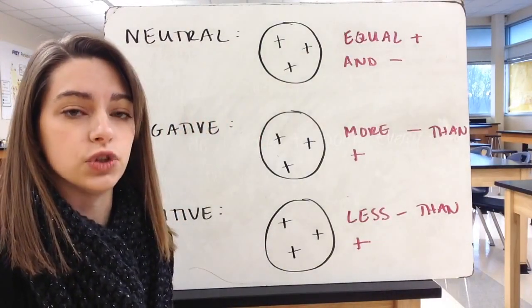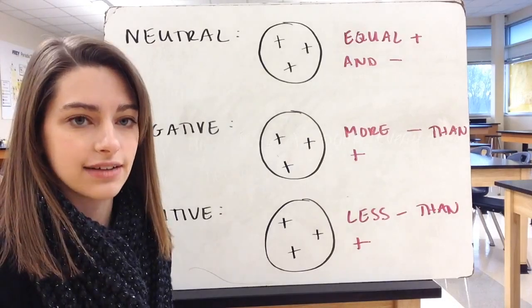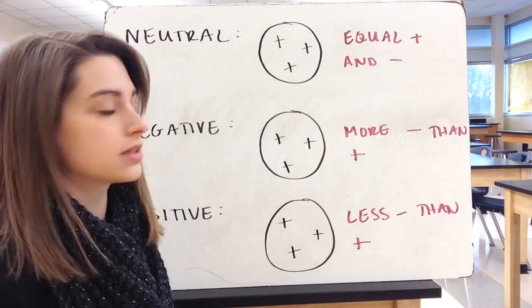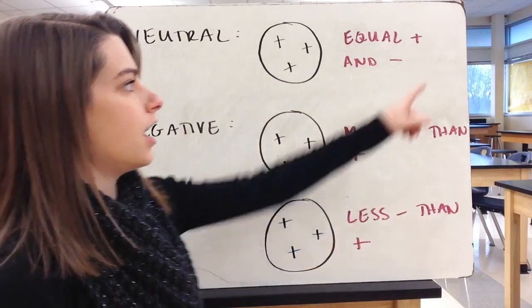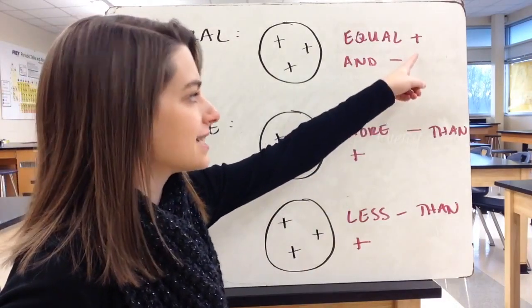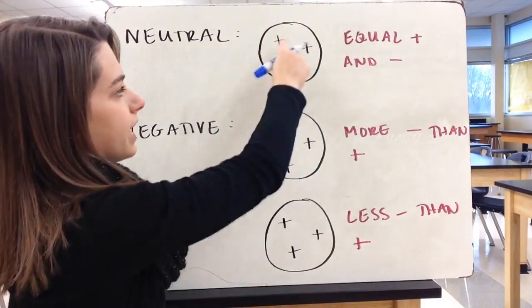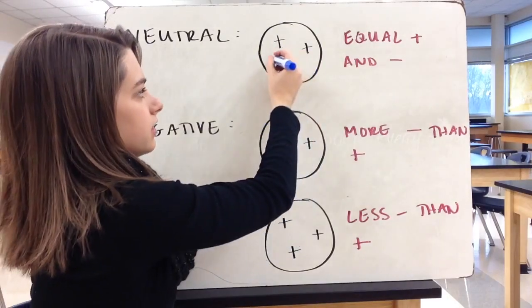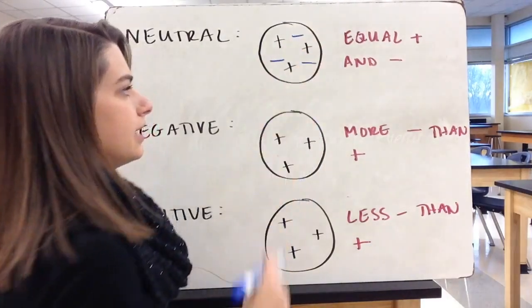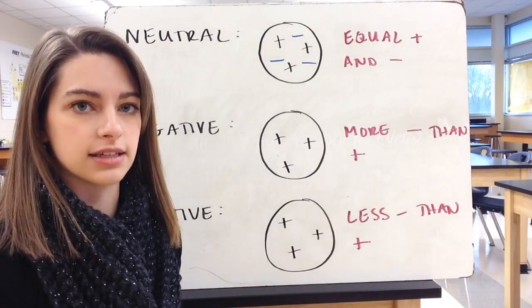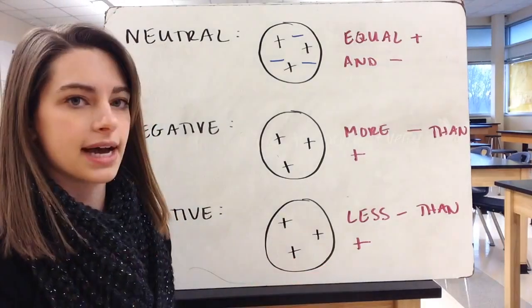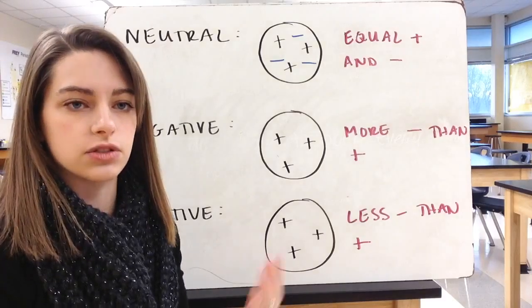With this model, we can have neutral atoms, we can have negative atoms, and we can have positive atoms. If we're going to have neutral atoms, we must have equal amounts of positive and negative. So if we have three positives in here, we have to have three negative charges as well. If we think of this in terms of numbers, they're going to balance out. If you add negative 3 and positive 3, you end up with 0. It's overall neutral.